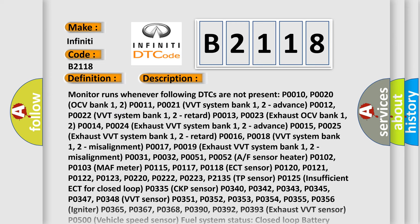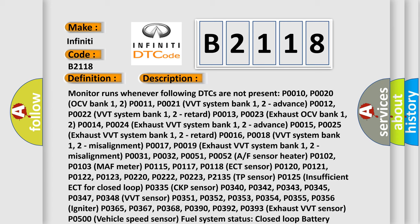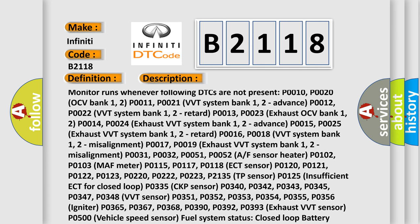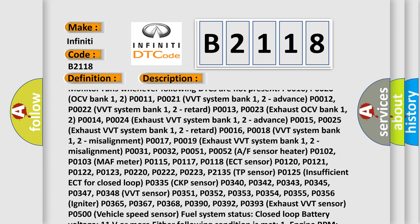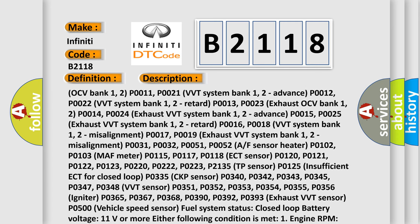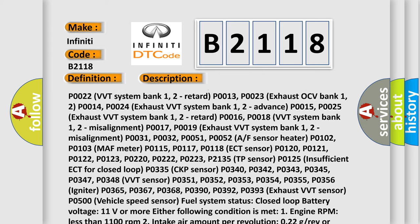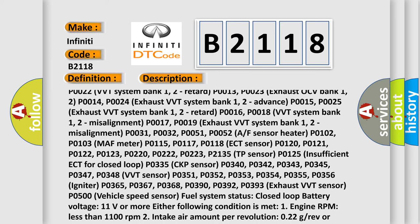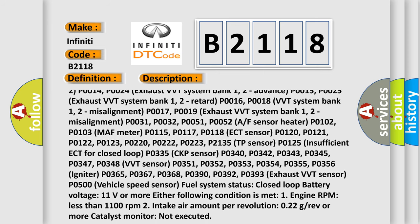The monitor runs whenever the following DTCs are not present: P0010, P0020 (OCV Bank 1, 2); P0011, P0021 (VVT System Bank 1, 2 Advance); P0012, P0022 (VVT System Bank 1, 2 Retard); P0013, P0023 (Exhaust OCV Bank 1, 2); P0014, P0024 (Exhaust VVT System Bank 1, 2 Advance); P0015 (Exhaust VVT System Bank 1, 2 Retard); P0016, P0018 (VVT System Bank 1, 2 Misalignment); P0017, P0019 (Exhaust VVT System Bank 1, 2 Misalignment).